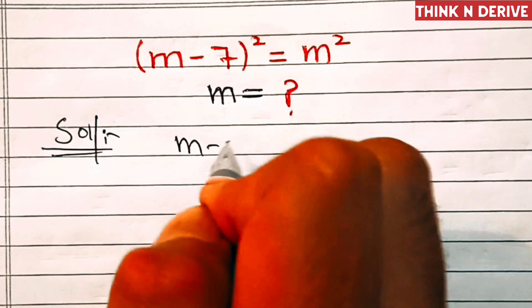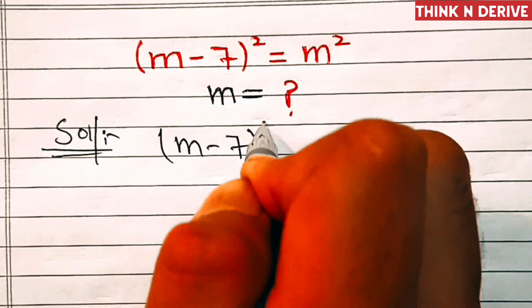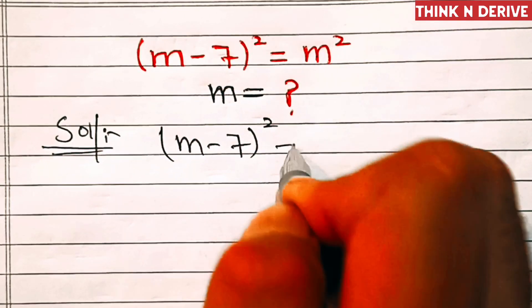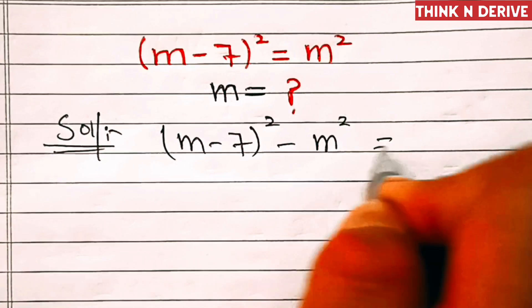In the first step, we'll take m minus 7 square and transpose m square to the left hand side. This will become m minus 7 square minus m square equals zero.